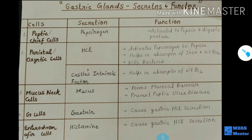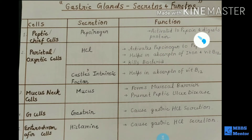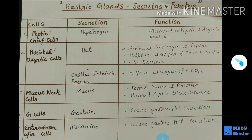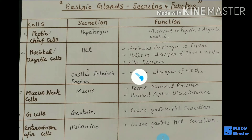Number one is the peptic cells, also called chief cells. Their secretion is the pro-enzyme pepsinogen — not directly pepsin, but pepsinogen. The function of pepsinogen is that it is activated to pepsin and digests protein. So our main protein digestive enzyme in the stomach is pepsin, but peptic or chief cells secrete the pro-enzyme pepsinogen — pepsin in its inactive form.